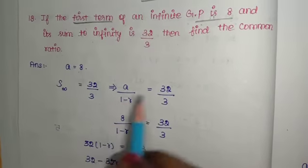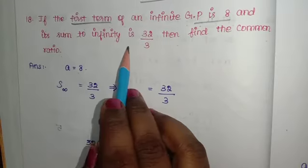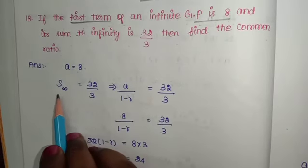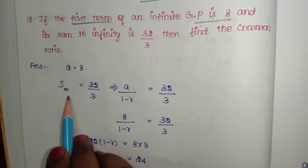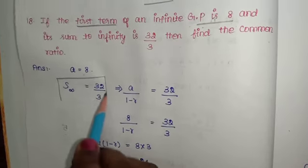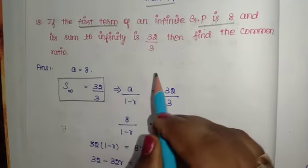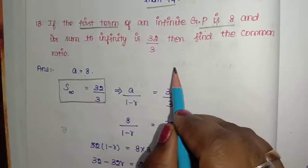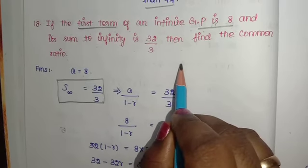They're asking for the common ratio and have given the sum to infinity. In GP, when r is greater than 1, we use one formula. When r is less than 1, another formula.